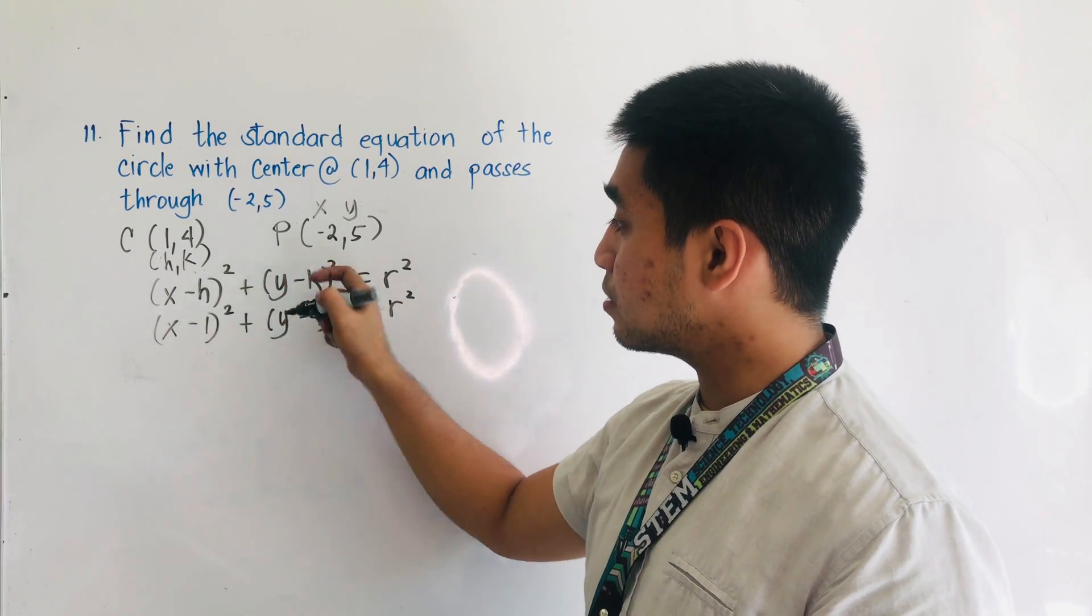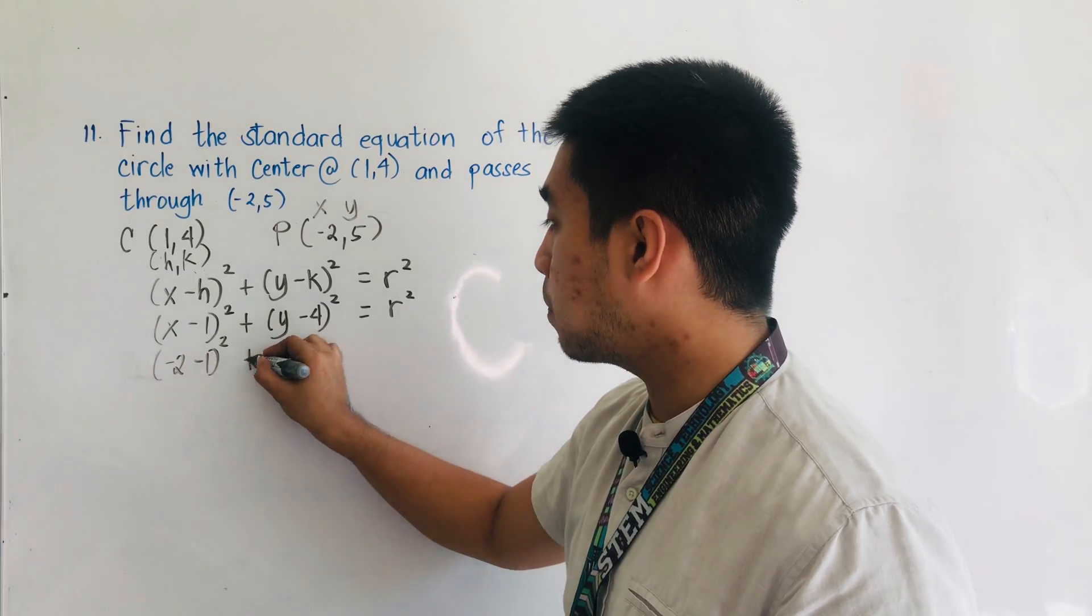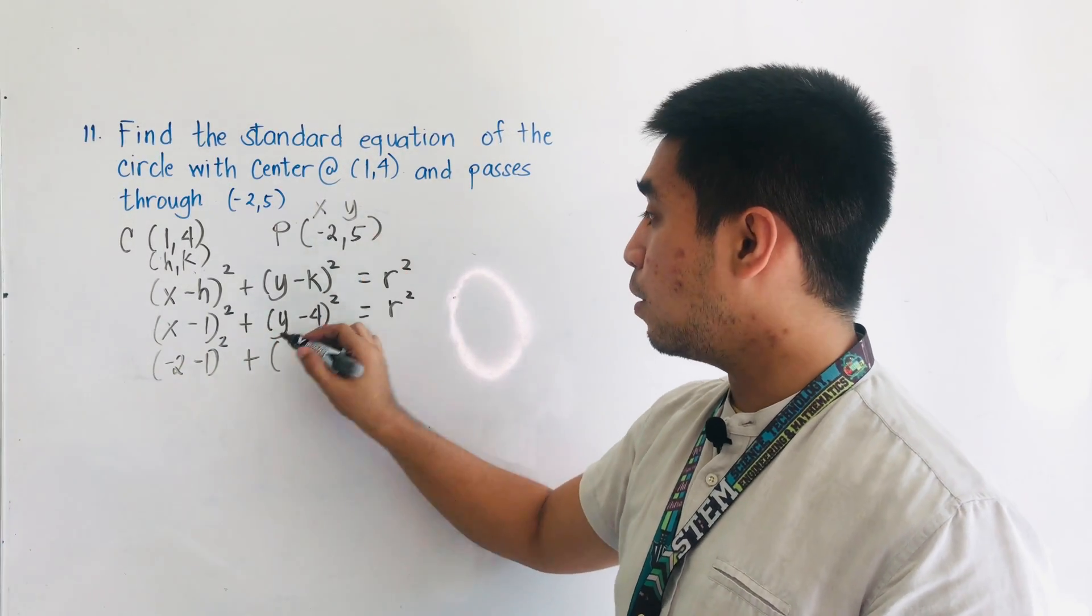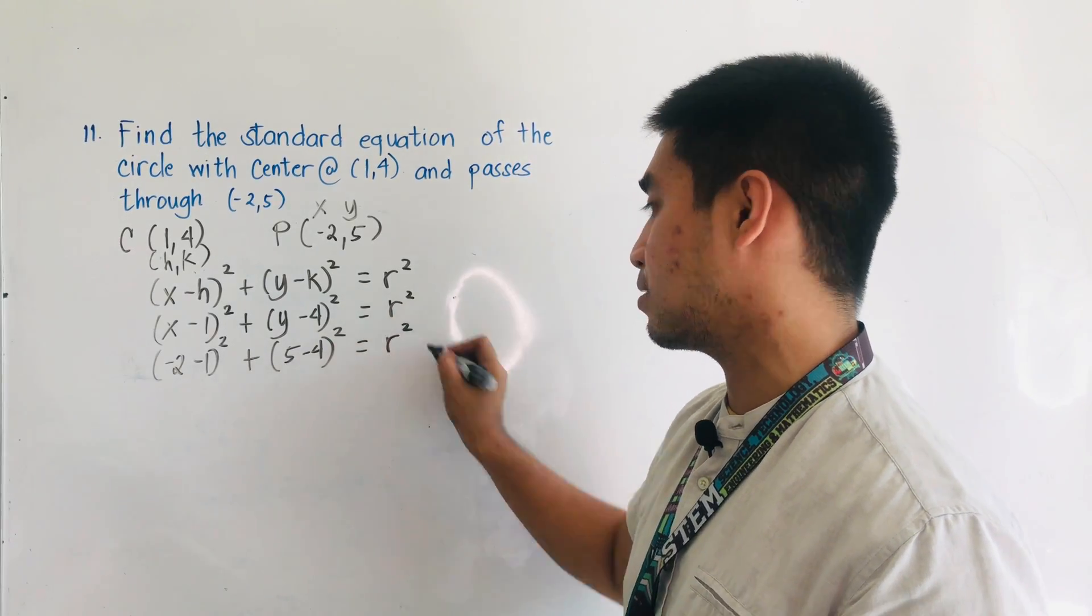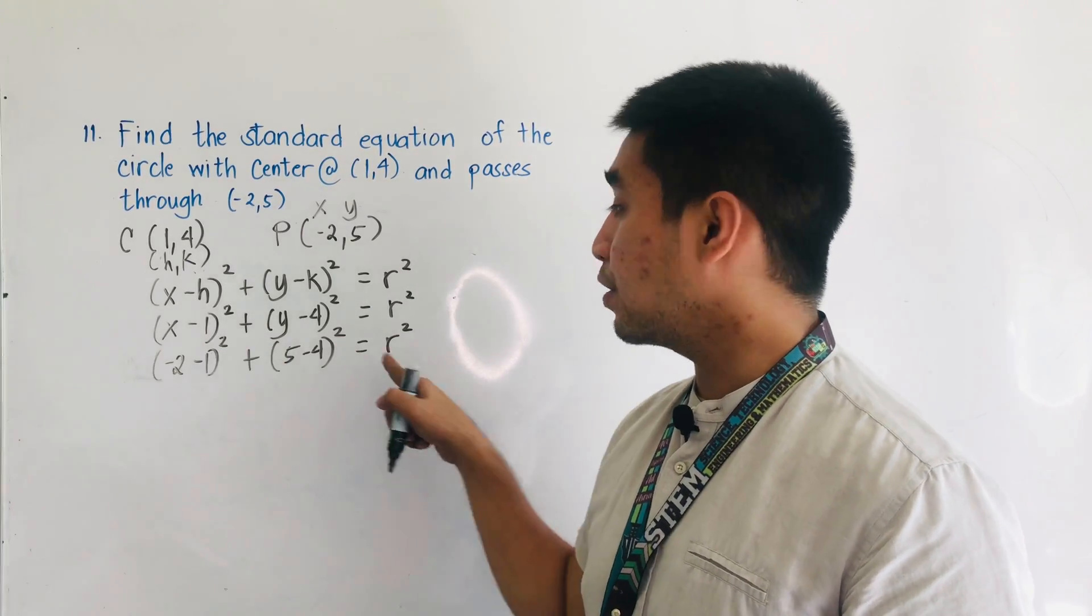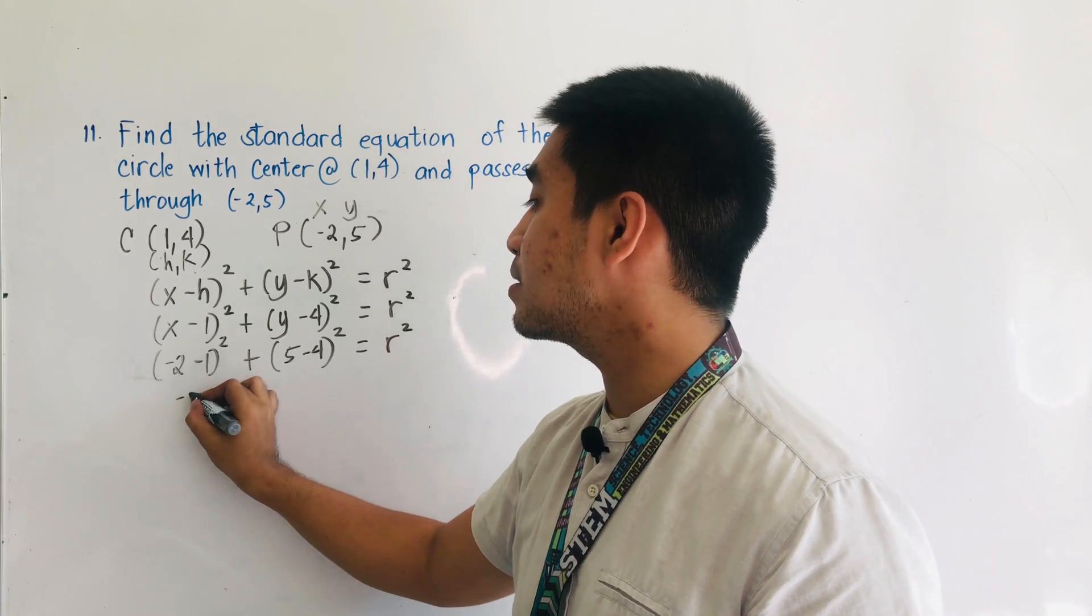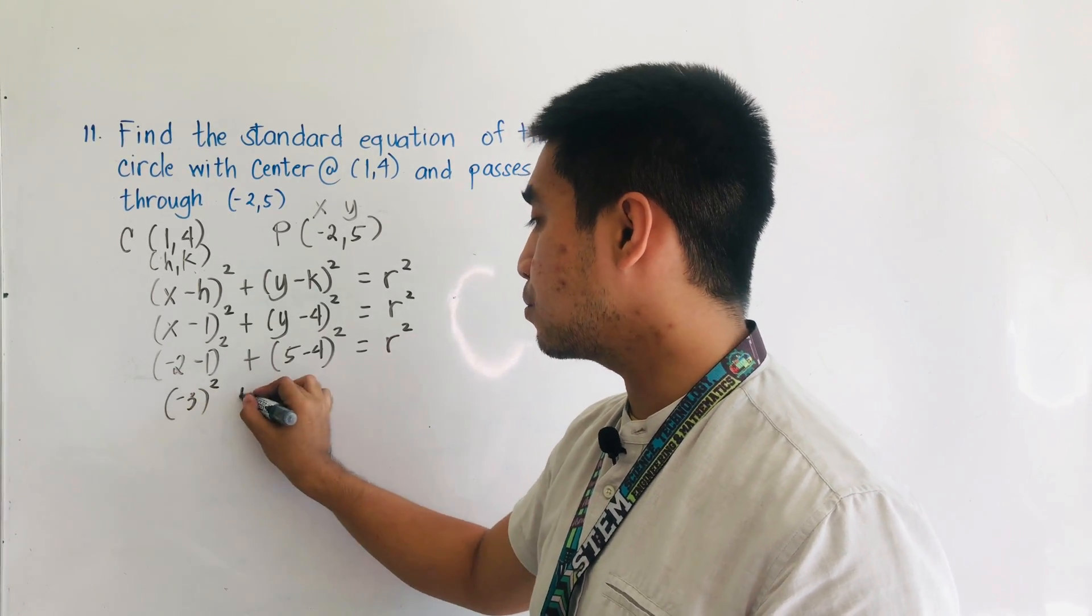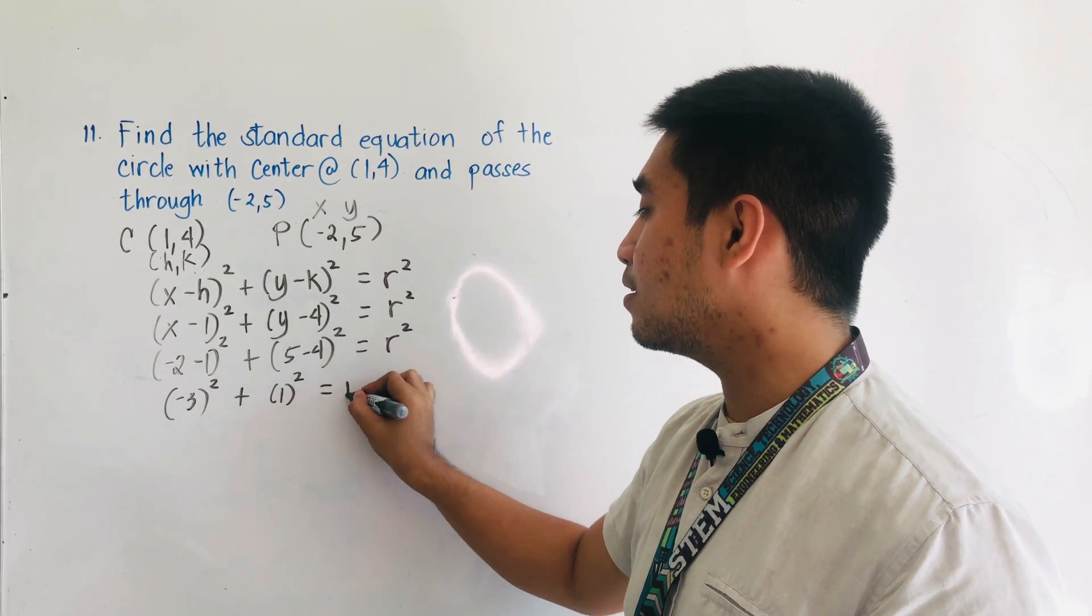Therefore, x minus 1 quantity squared, that becomes negative 2 minus 1 quantity squared plus, what is our y? Our y is 5 minus 4 quantity squared is equal to r squared. Based on this equation, let us now try to solve for the radius. Negative 2 minus 1, that becomes negative 3 squared plus 5 minus 4 is 1 squared is equal to r squared.